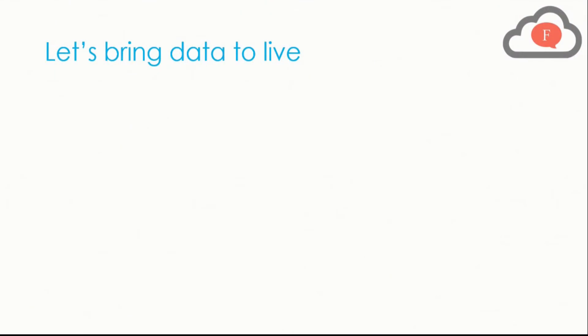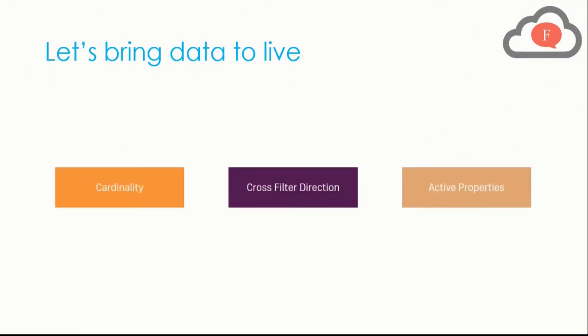Let's bring data to life. For understanding relationships, you must first understand three things: cardinality, cross filter direction, and active property. Understanding relationships in Power BI Desktop is itself a very complex procedure, and to understand it you have to understand these three concepts separately — cardinality, cross filter direction, and active properties — and how these three interrelate with each other.